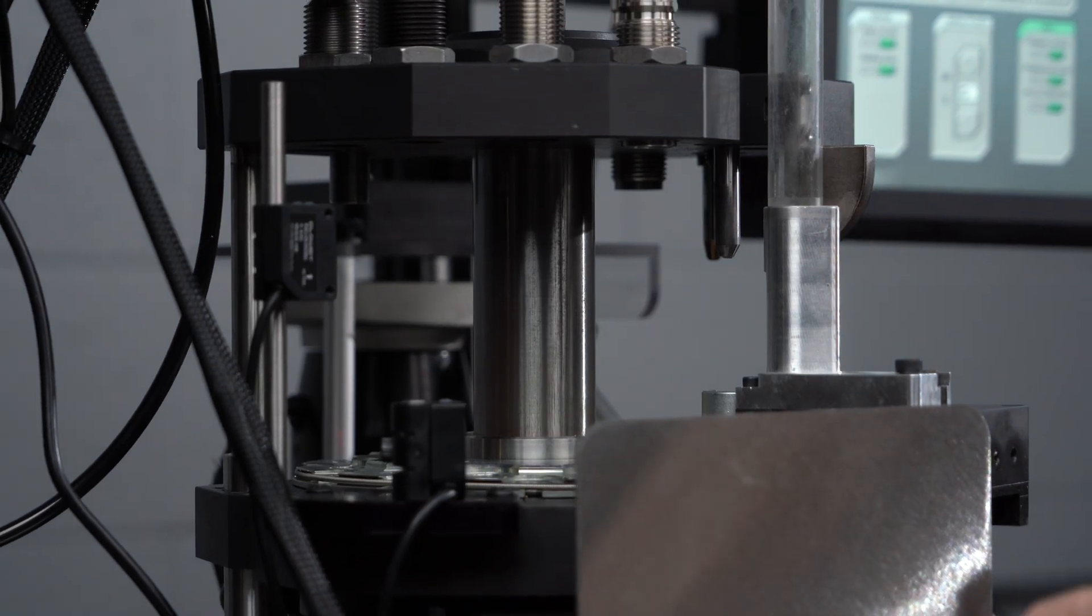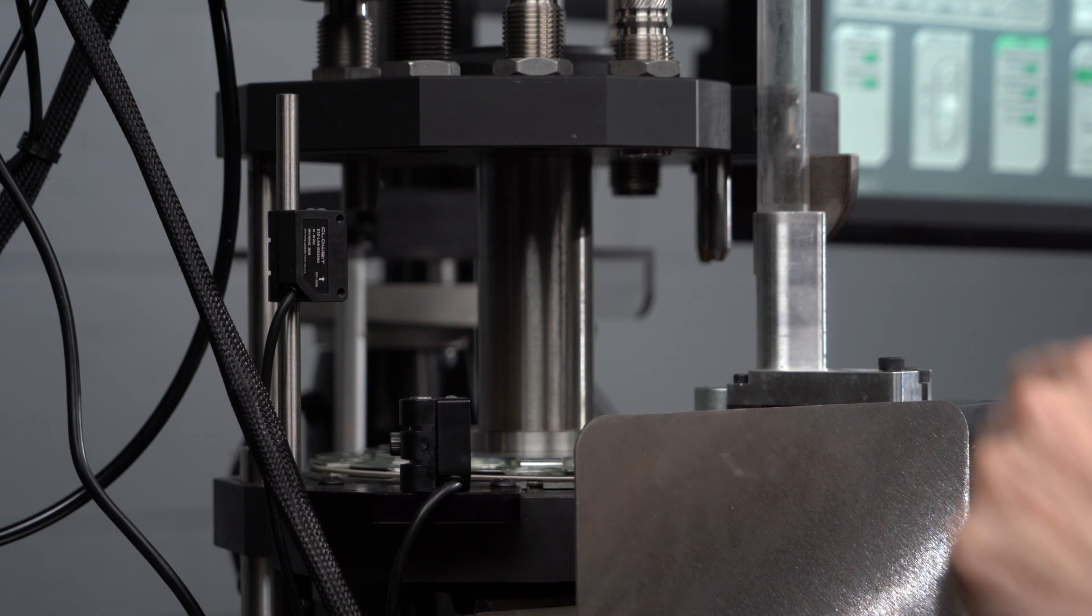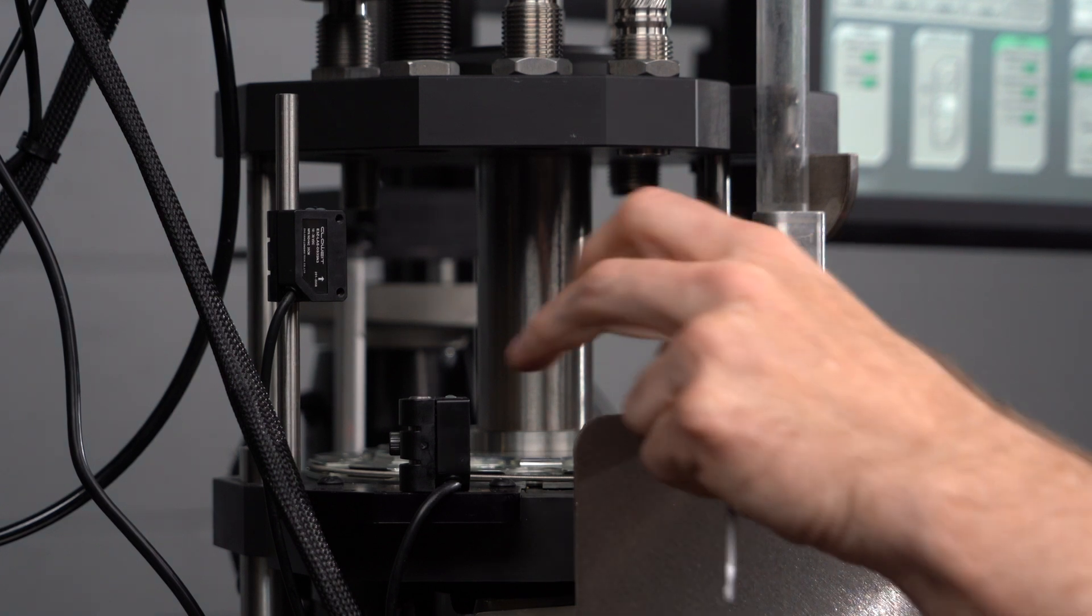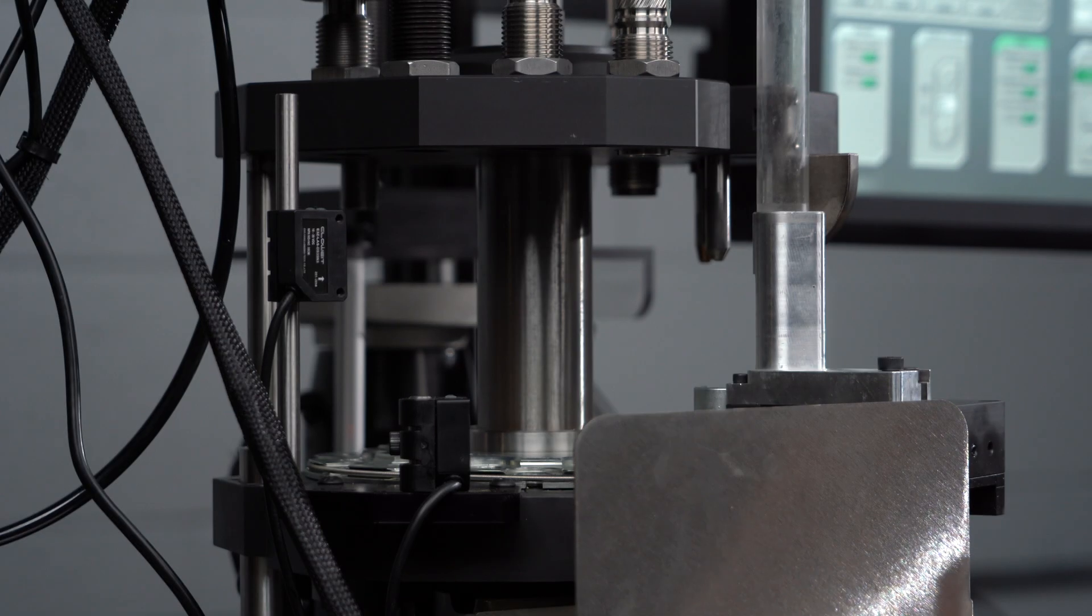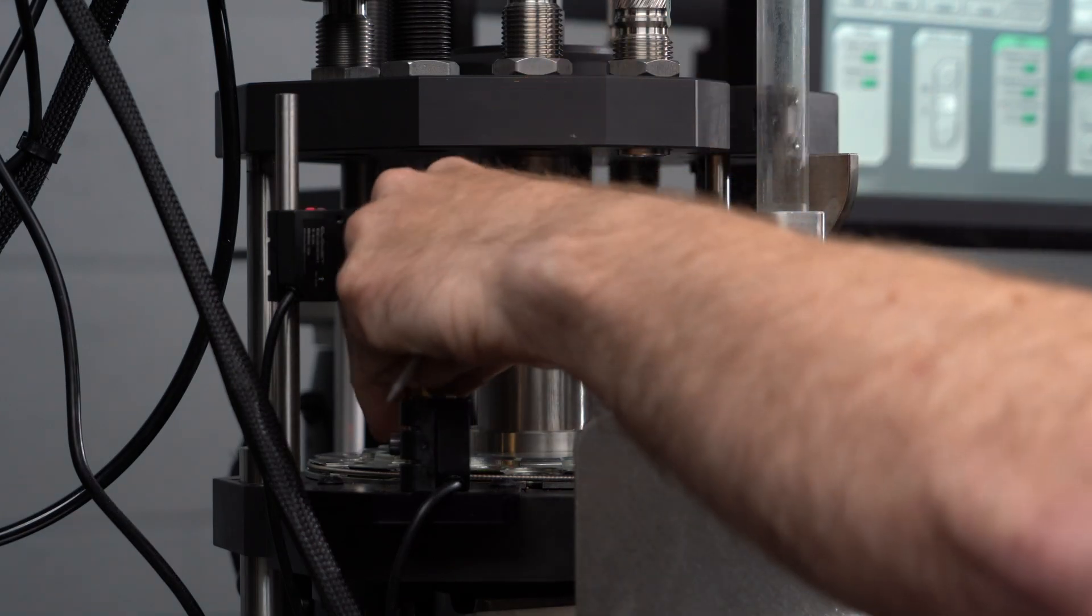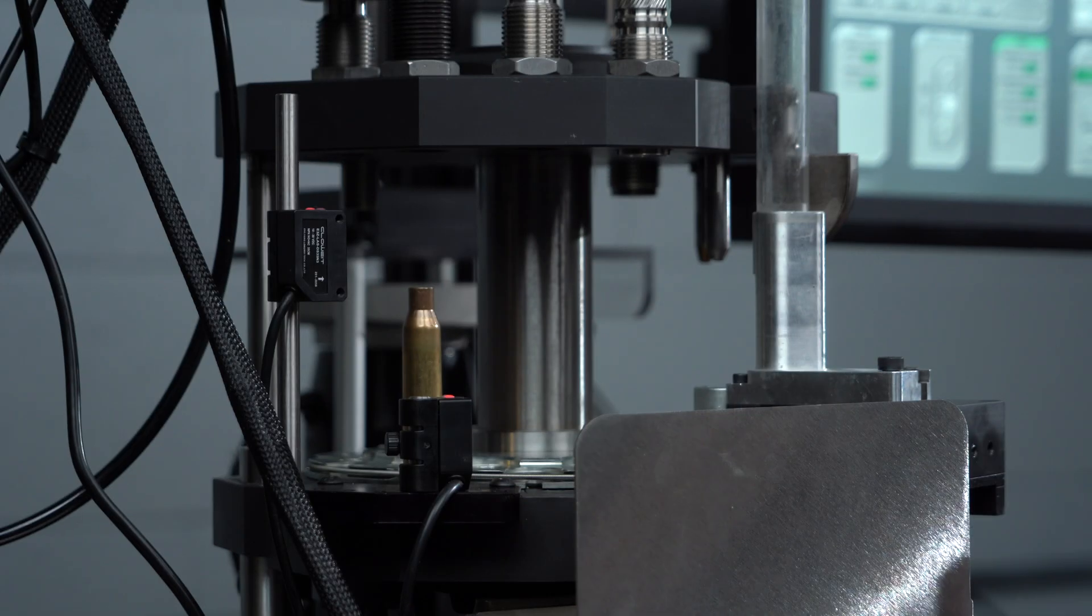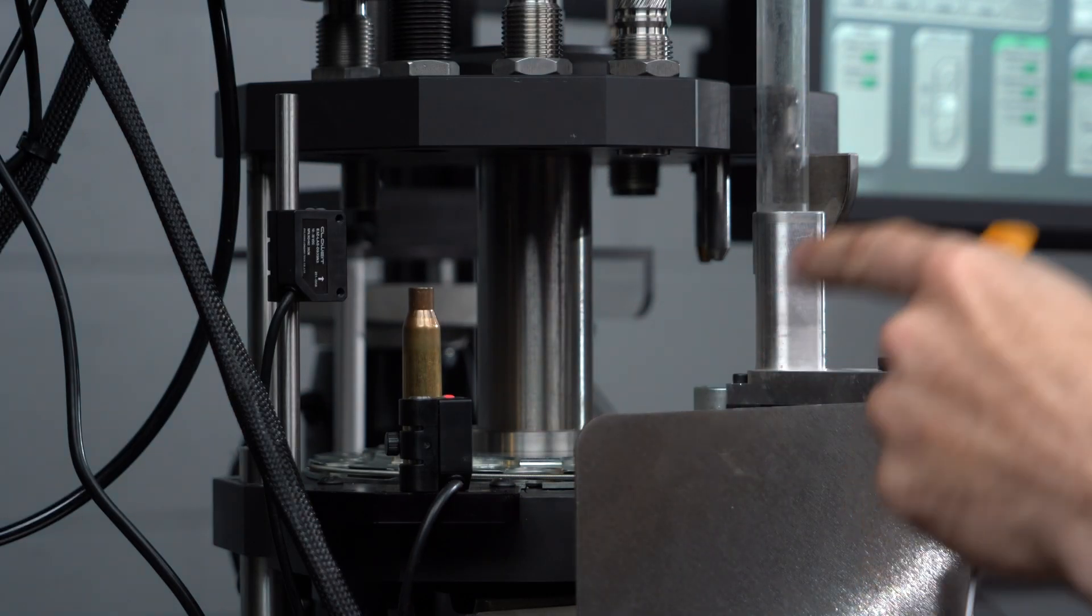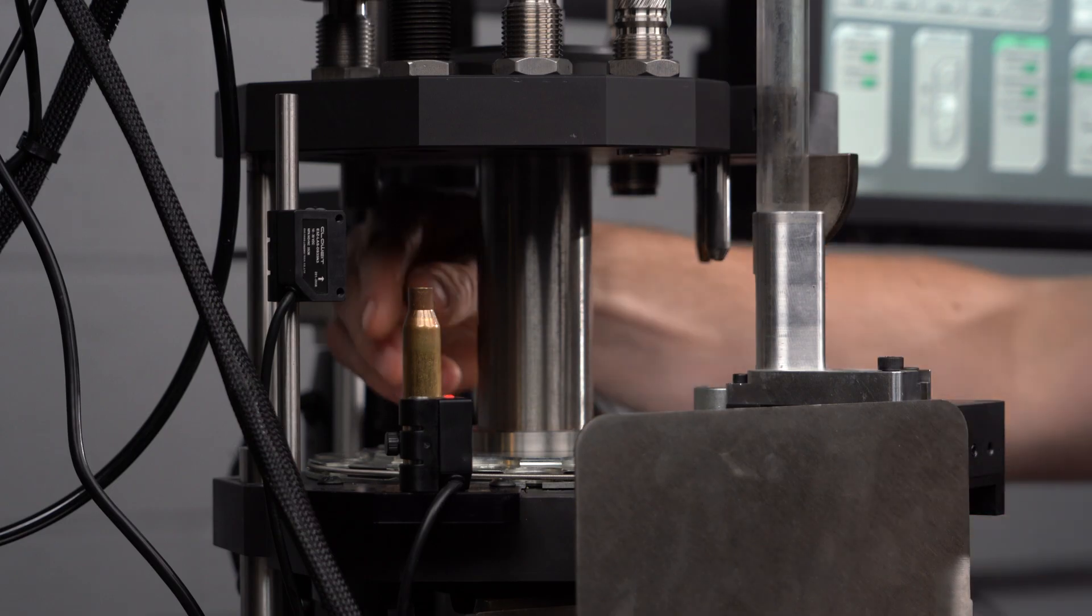Next up, we're going to set the case proximity sensor, which is the shorter of the two sensors here by the bullet dropper station. This is a laser emitter and it also detects reflection of laser light. So all we're going to do is place our case under the bullet dropper, make sure our laser is hitting the case. Then we're going to adjust the gain further away from the sensor to make sure it picks up the case no matter what.